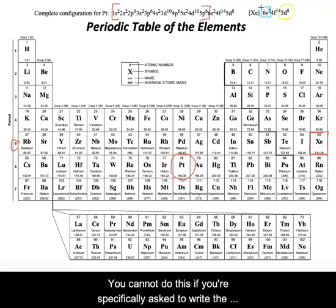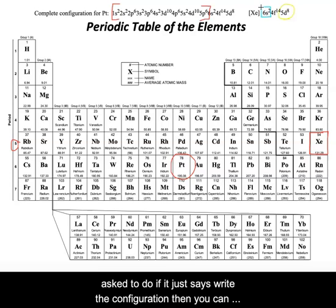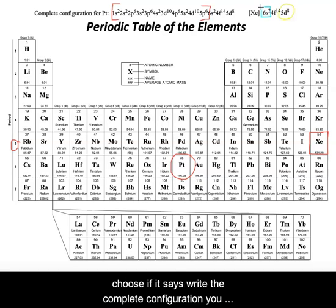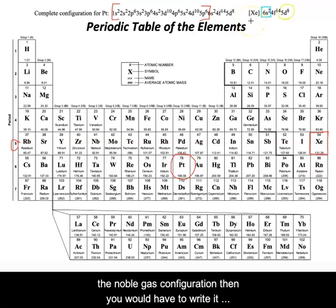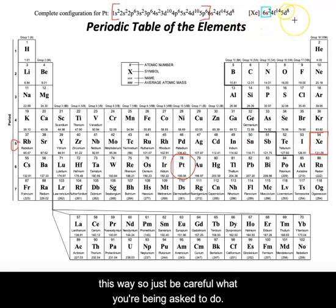But you cannot do this if you're specifically asked to write the complete configuration, so be careful what you're being asked to do. If it just says write the configuration, then you can choose. If it says write the complete configuration, you need to write all of it. And if it specifically says write the noble gas or abbreviated configuration, then you would write it this way.